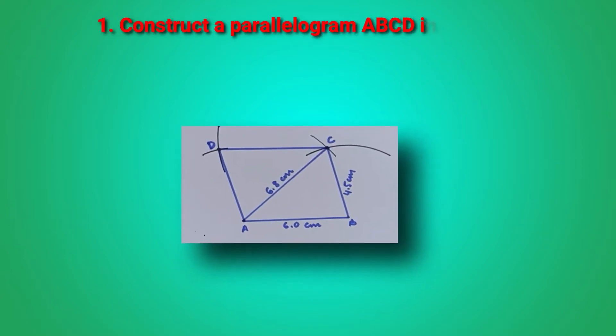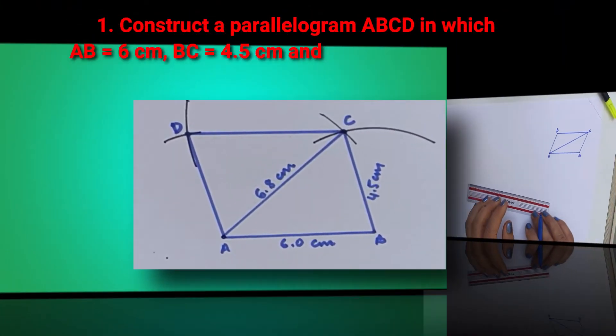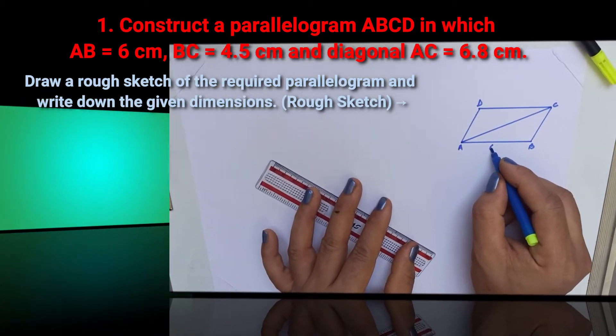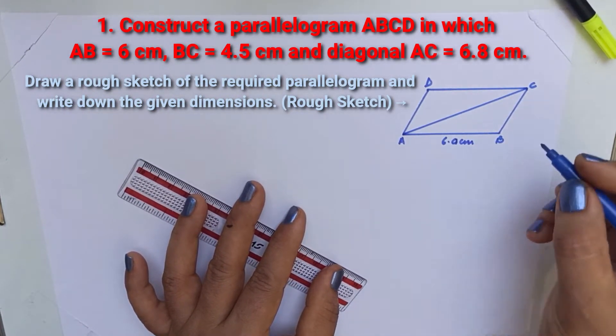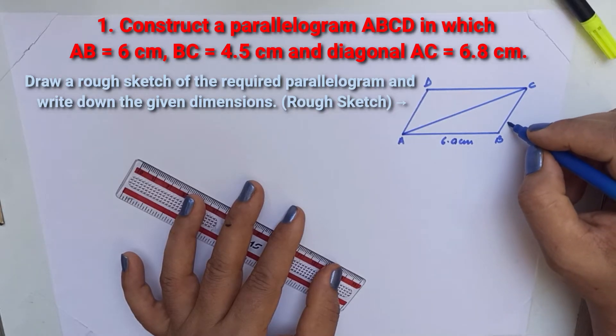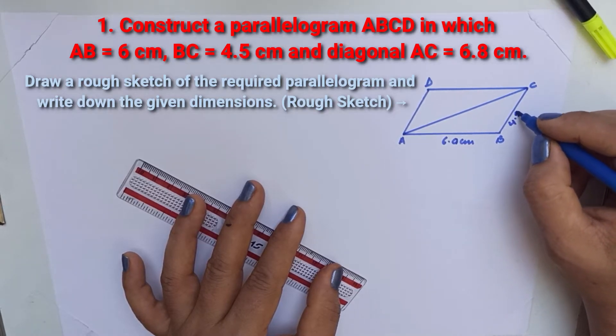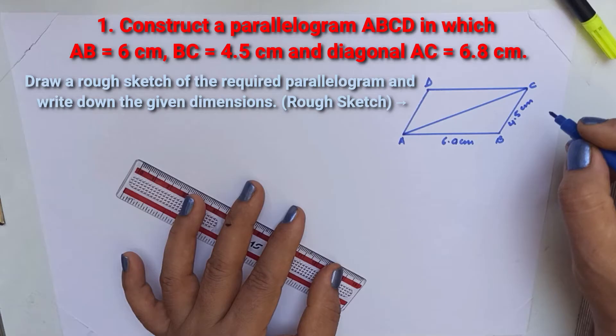In this video, we are going to learn how to construct a parallelogram ABCD in which two sides AB is equal to 6 cm and BC is equal to 4.5 cm and diagonal AC is equal to 6.8 cm is given.